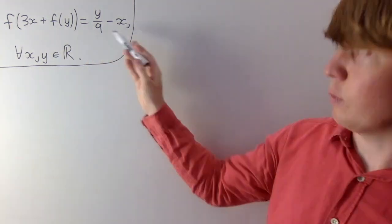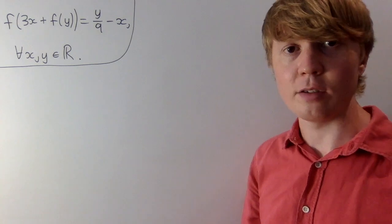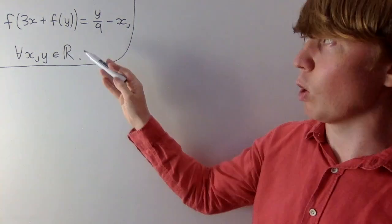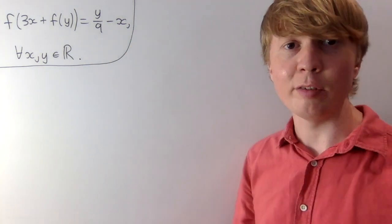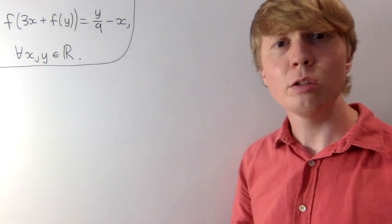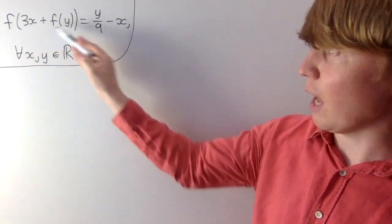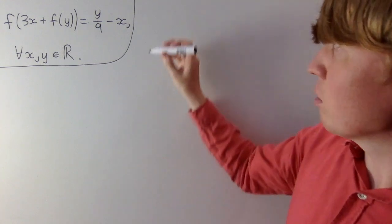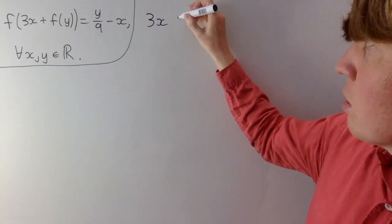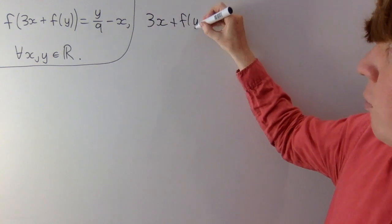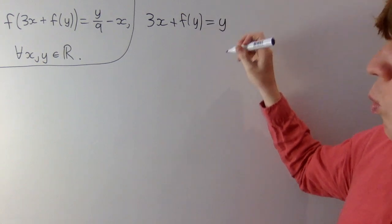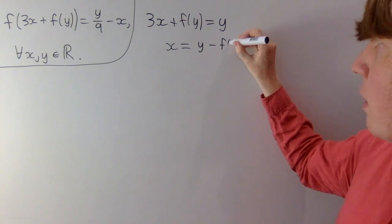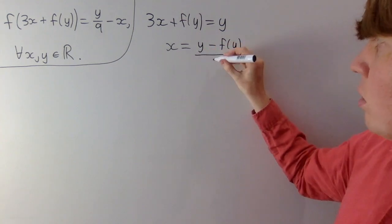Here's our first functional equation. This is true for all x and y. What we're going to do is take advantage of the fact that this is true for x and y, but we only really need one variable to define our function. So we're going to make a very clever choice of x — we're going to choose x so that 3x plus f(y) is just equal to y. Rearranging, this means we need x equal to (y minus f(y)) divided by 3.